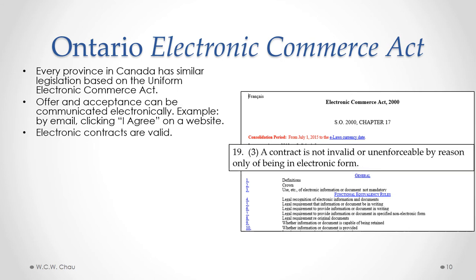The Electronic Commerce Act confirms that electronic contracts can be valid contracts. They still have to meet all of the various rules regarding what is a valid contract, such as the three essential elements: an agreement, an intention to form legal relations, and consideration. The Electronic Commerce Act just confirms that a contract being formed electronically does not in and of itself make it invalid.